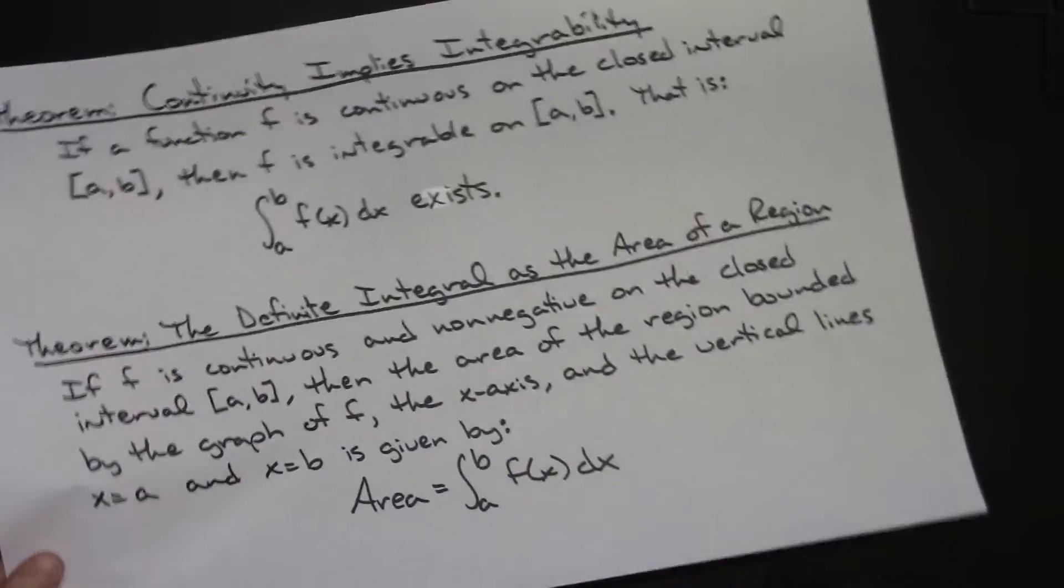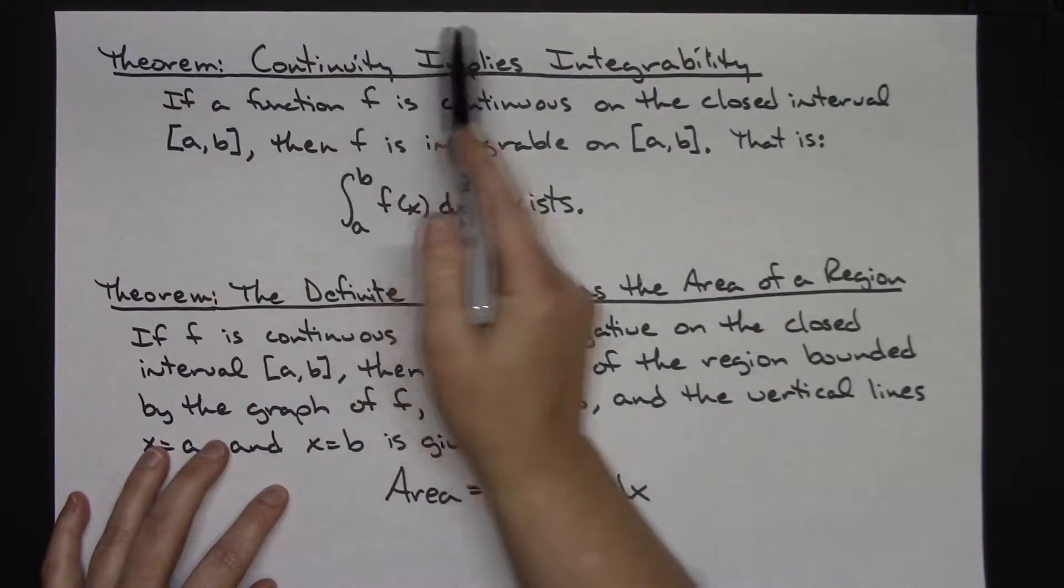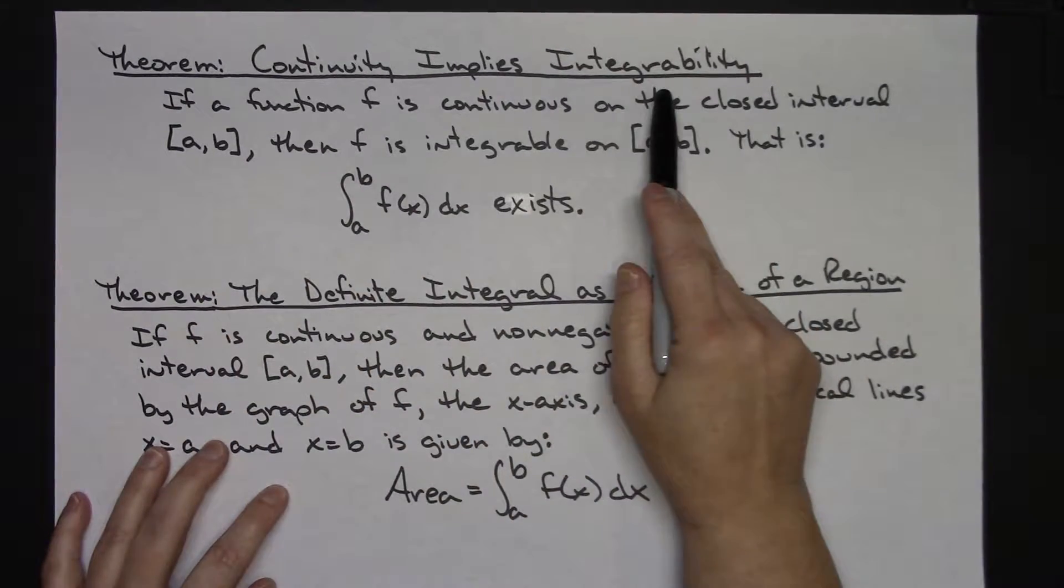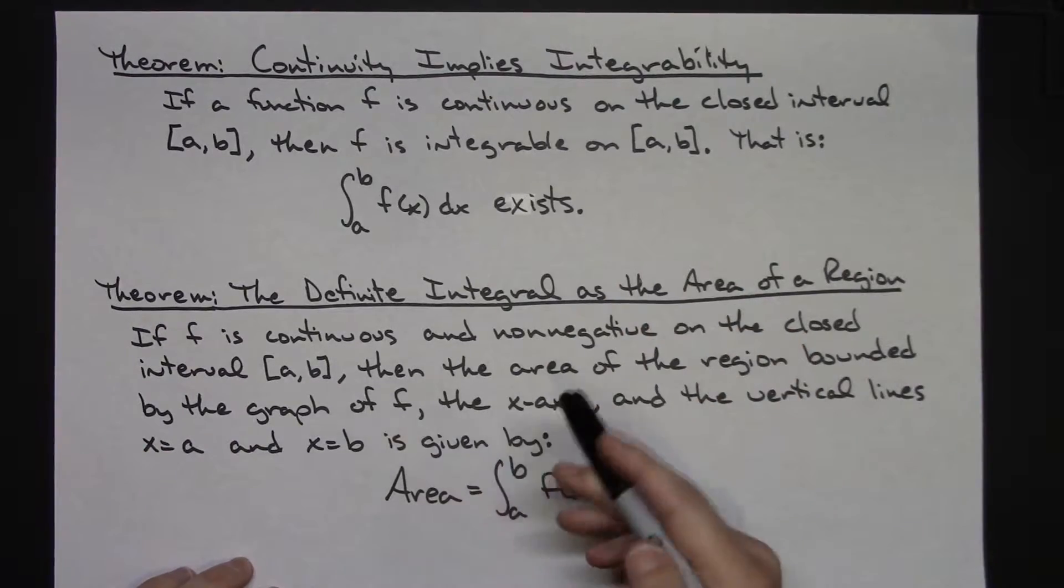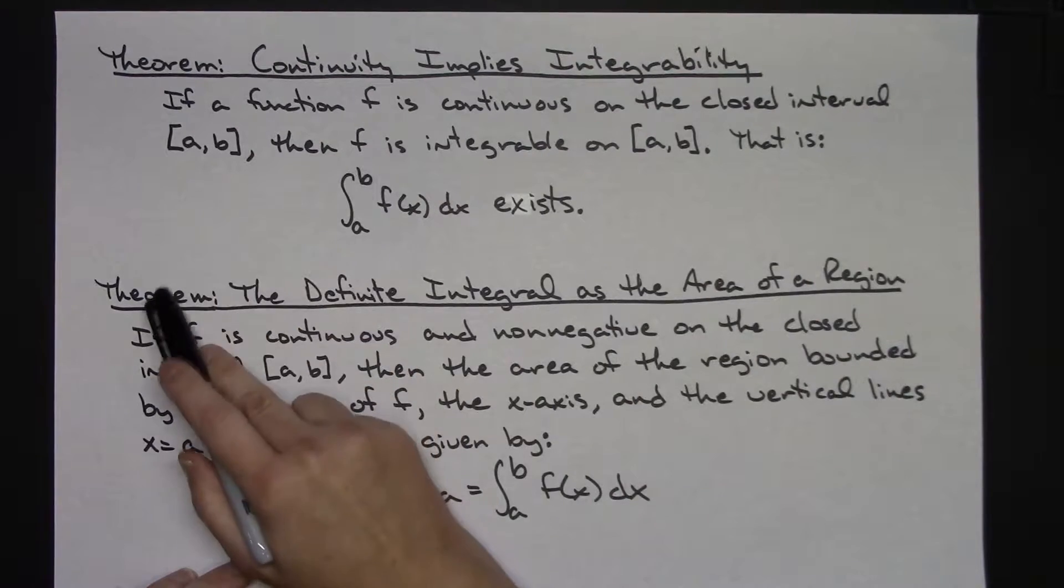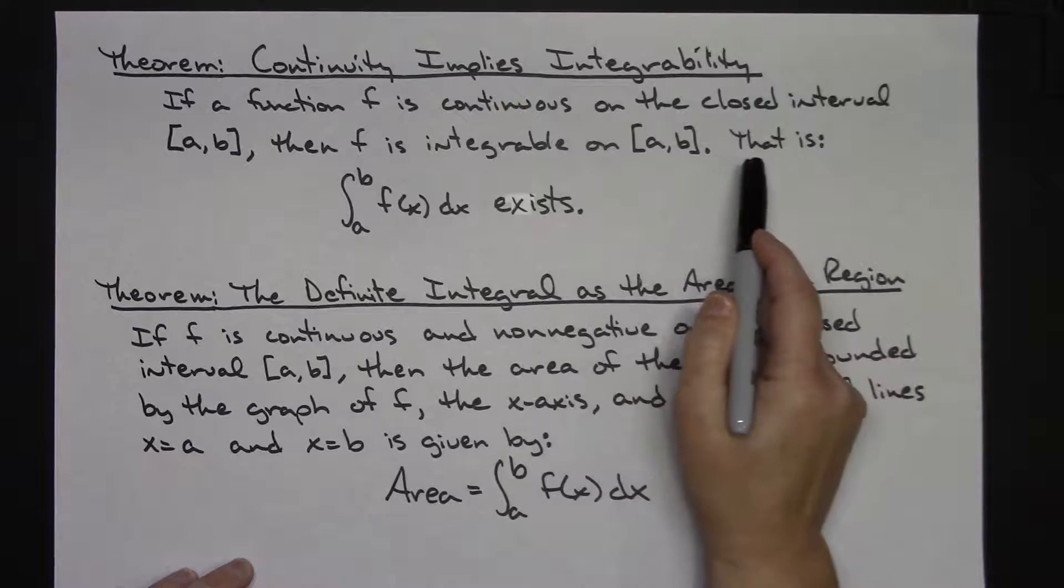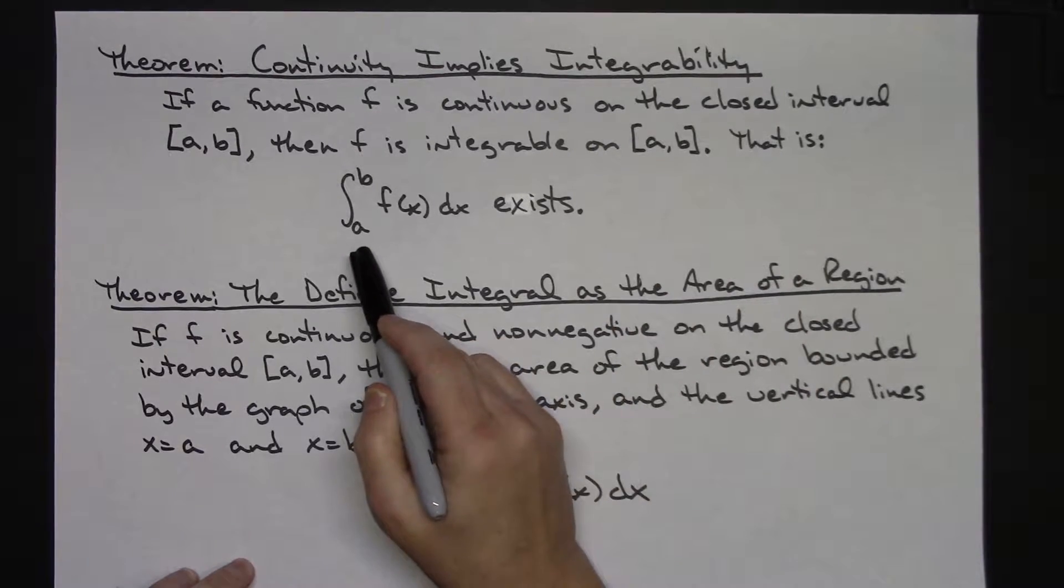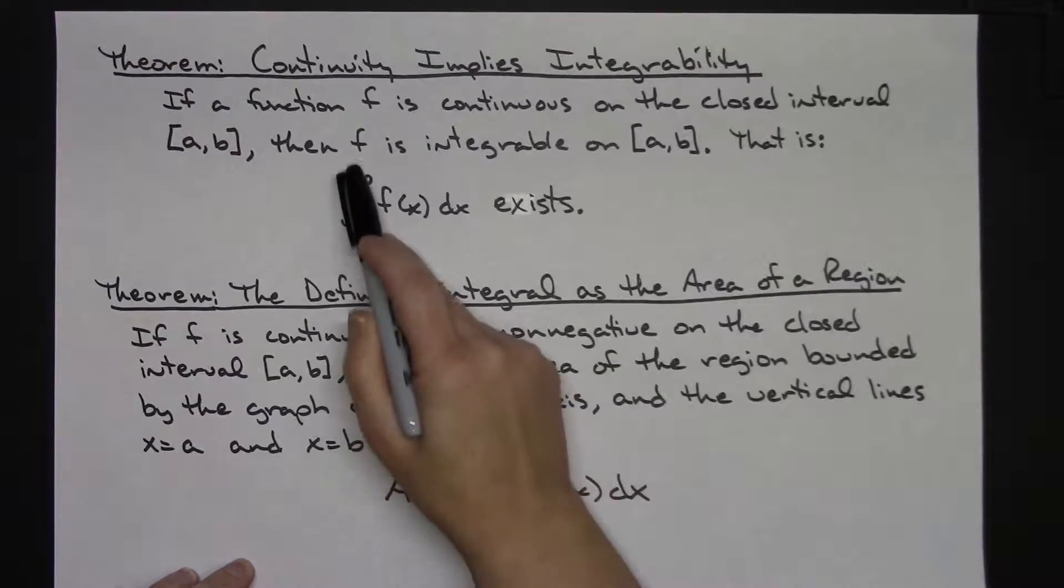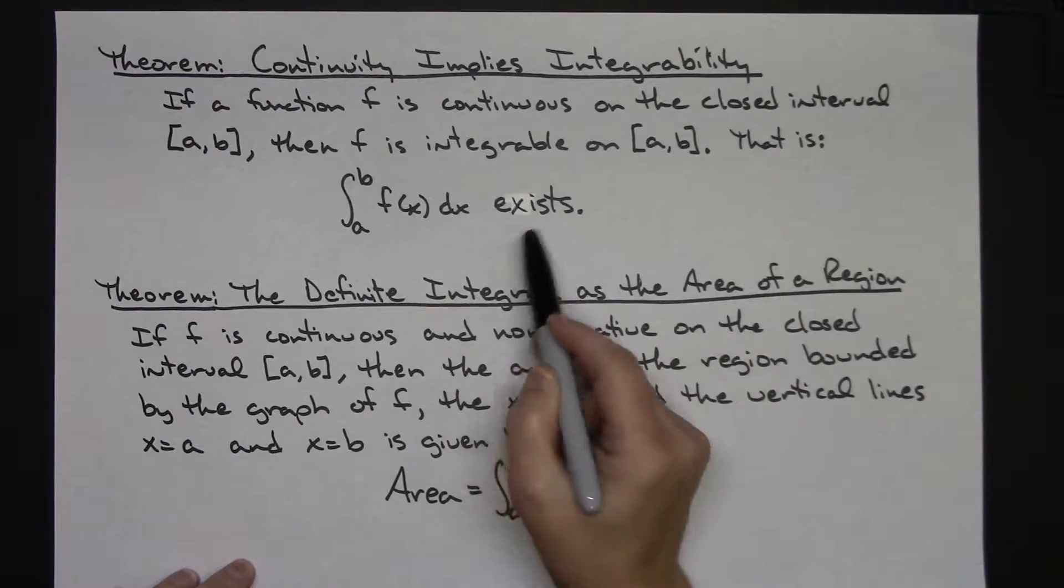We've got a theorem here - it says continuity implies integrability. If you've got a function and it's continuous on a closed interval from a to b, then f is integrable on that interval. In other words, on that interval from a to b of f of x, if I integrate from a to b of f of x dx, I'm guaranteed that that's going to exist as long as my function is continuous on that closed interval.